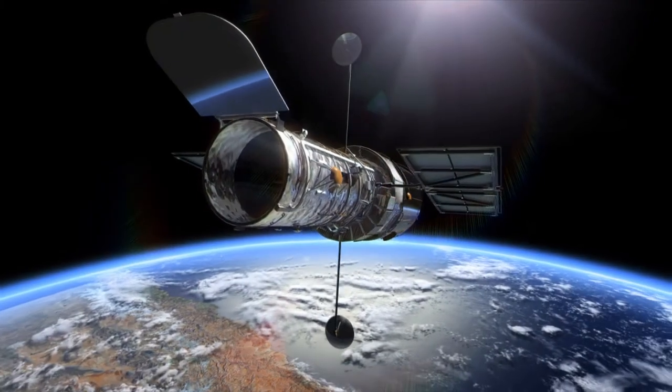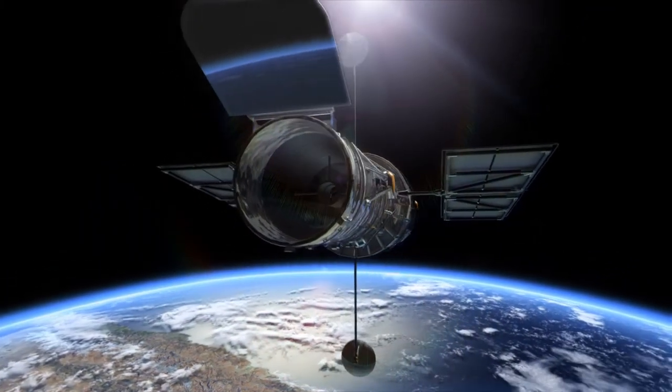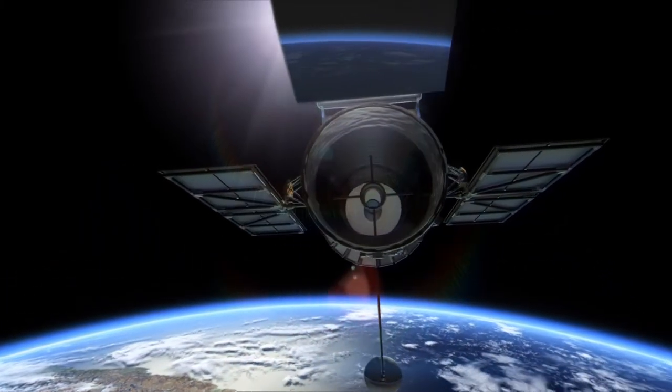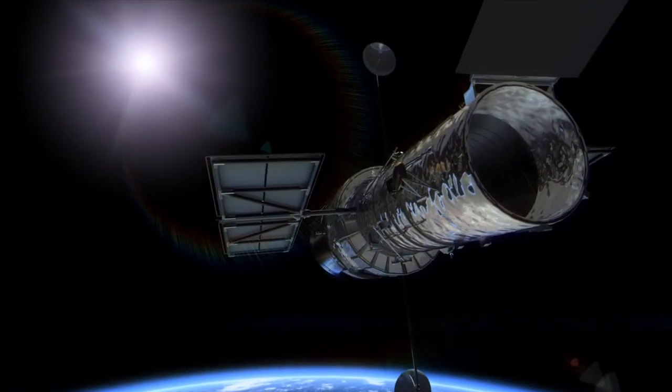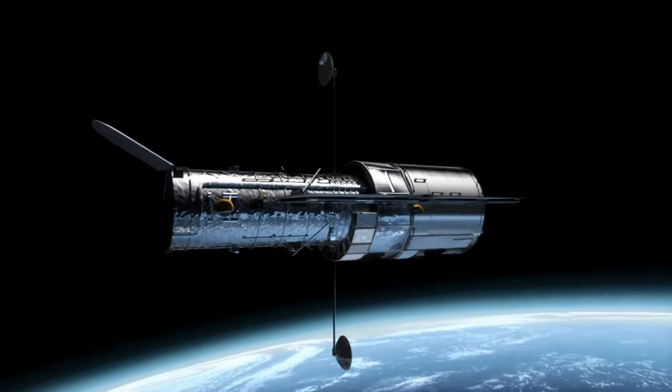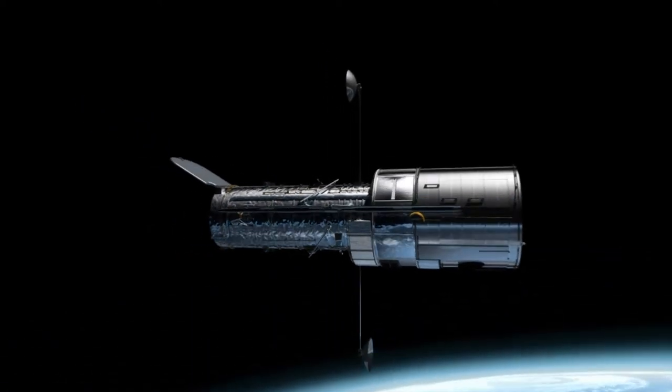By modern standards, Hubble's mirror is actually quite small, measuring only about 2.4 meters across. But its location is literally out of this world. High above the blurring effects of the atmosphere, it has an exceptionally sharp view of the universe.